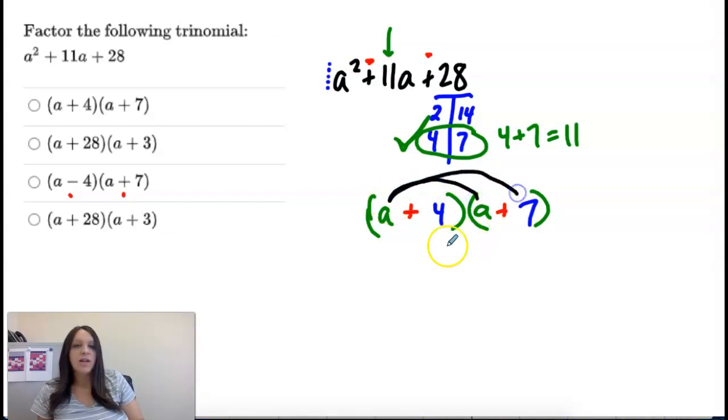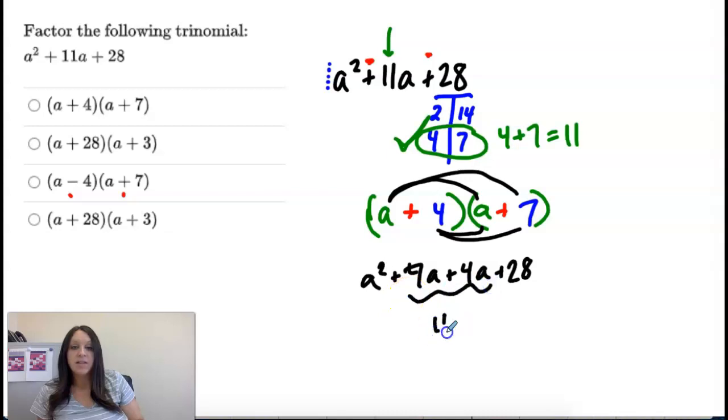You can multiply these out and you'll end up with a squared plus 7a plus 4a plus 28. And I combine these to get that 11, which is what we started with. So it's this top one.